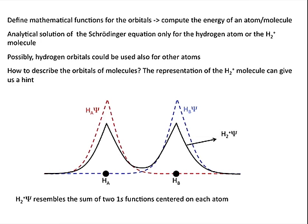So, we could try to express molecular orbitals as a linear combination of atomic orbitals. This is called the LCAO method.